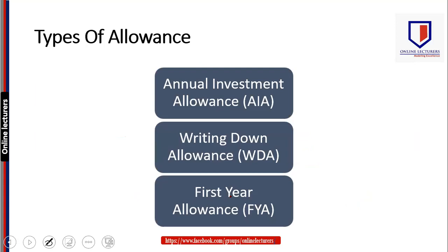There are three types of capital allowances usually available. One is the Annual Investment Allowance, called AIA. The second is the Written Down Allowance. And the third is the First Year Allowance. We need to learn on what qualifying plant and machinery we can get AIA, WDA, or First Year Allowance.